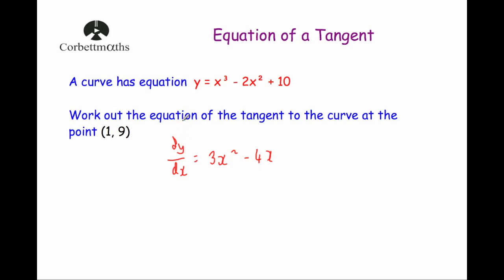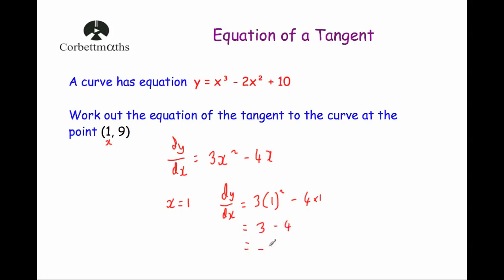Now we want to work out the gradient of the curve at the point (1, 9), because that would be the gradient of the tangent at that point. So we see that x is equal to 1, and we're going to substitute x equals 1 into dy by dx. That gives us 3 times 1 squared minus 4 times 1. Remember the order of operations: 1 squared is 1, times 3 is 3; 4 times 1 is 4. So 3 take away 4 is minus 1. The gradient of the curve and the tangent at the point (1, 9) is negative 1.